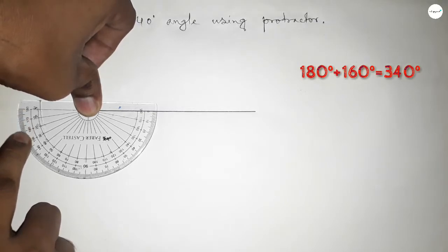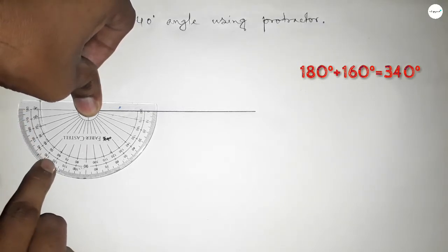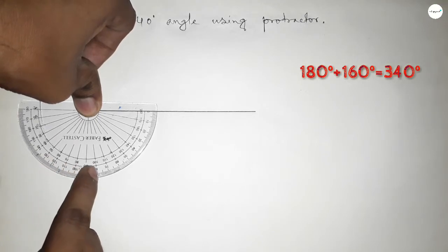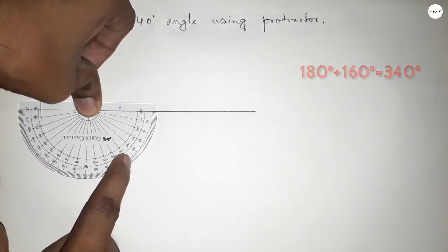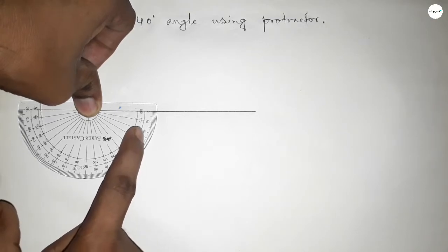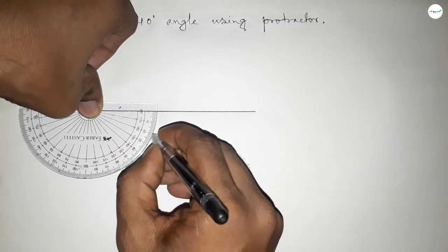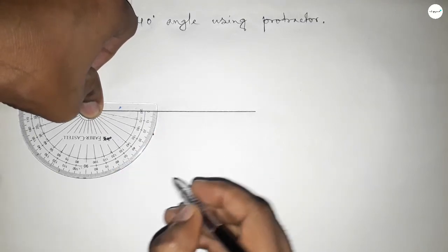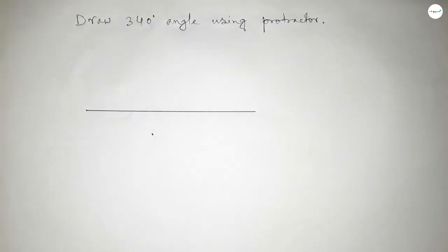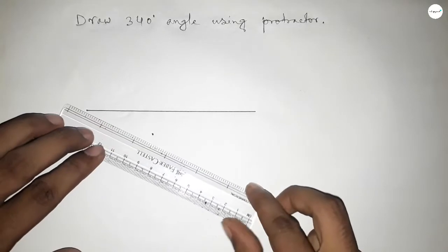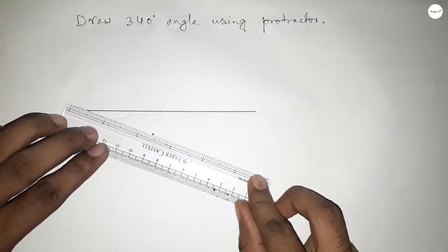...this is 10, 20, 30, 40, 50, 60, 70, 80, 90, 100, 110, 120, 130, 160. So this is 160 degrees. If you add 160 degrees with 180 degrees, then we can get 340 degrees.